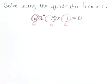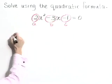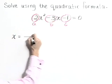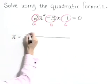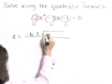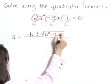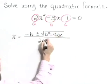Now let's write down our quadratic formula. x is equal to -b plus or minus the square root of b² - 4ac all over 2a.